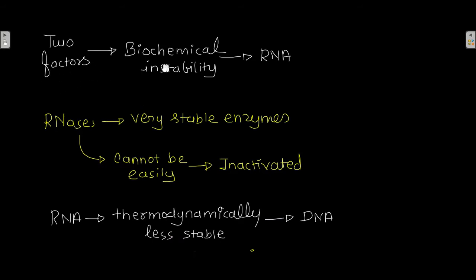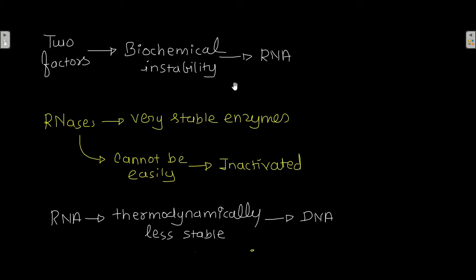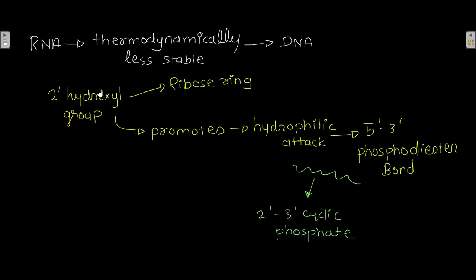The first factor is ribonucleases. Ribonucleases are very stable enzymes and cannot be easily inactivated. As you know, ribonucleases degrade RNA — they break the phosphodiester bond of RNA. The fact that these enzymes are very stable is one factor contributing to the biochemical instability of RNA.